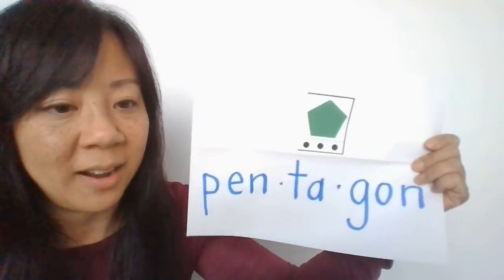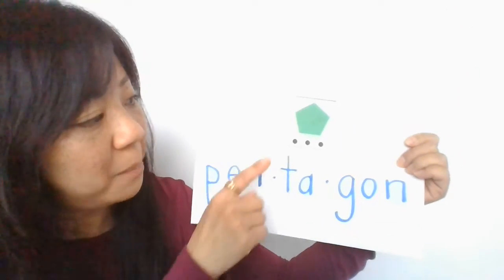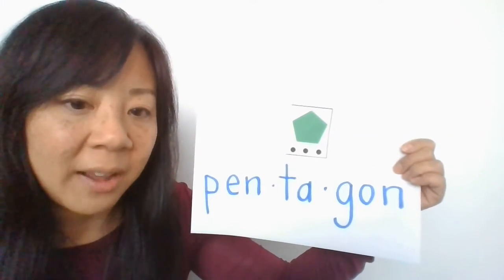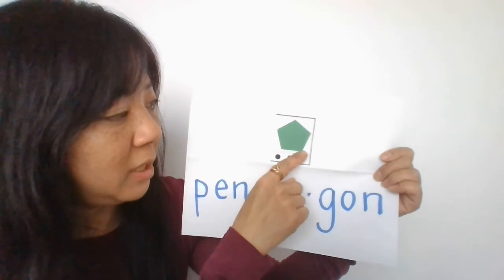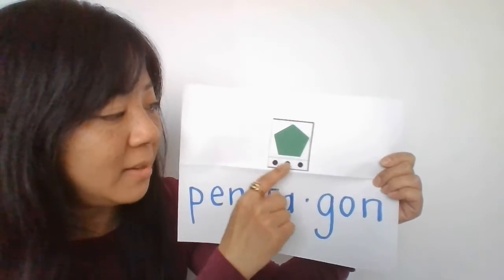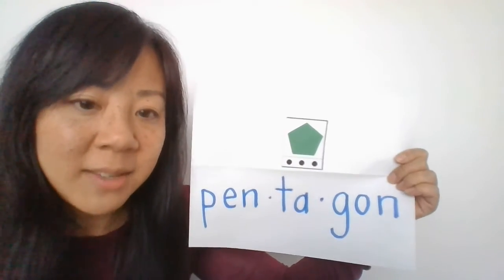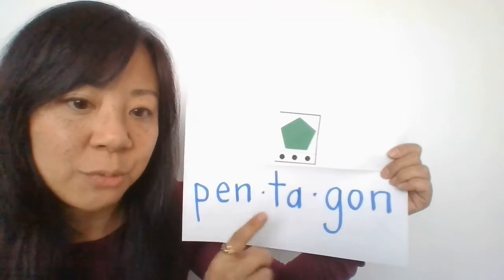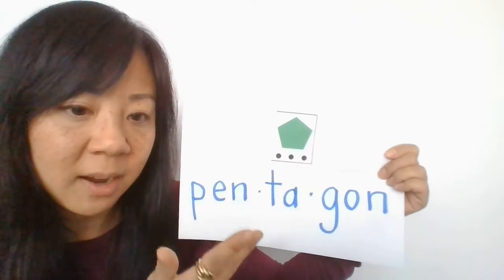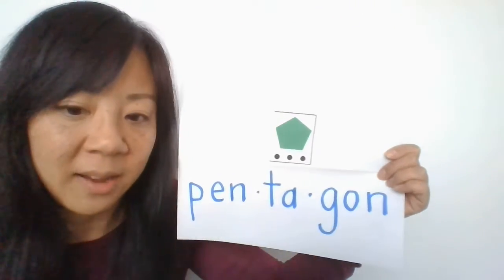Let's take a look at it. Pentagon is a shape. A pentagon is a shape that has five sides. One, two, three, four, five. Pentagon. So the word pentagon is a shape that has five sides. When you read it, it has three claps. Pen-ta-gon. Pen-ta-gon.